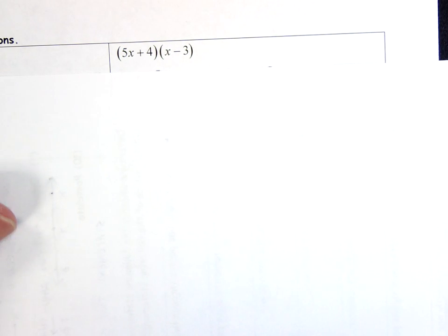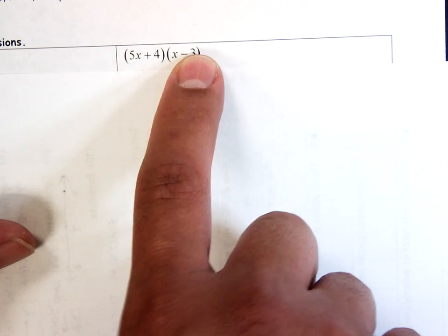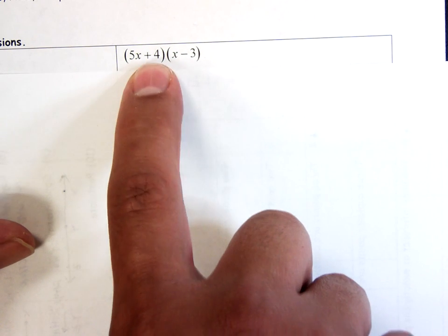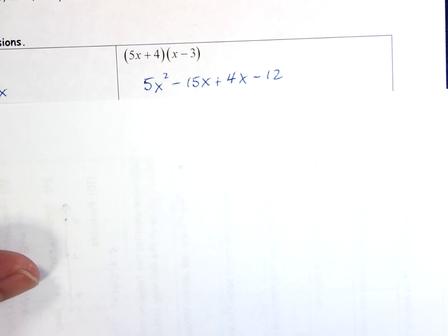Again, I've got to do double distribution here. 5x times x, 5x times minus 3, 4 times x, 4 times minus 3 which gives me that, 5x² - 15x + 4x - 12. I combine my like terms and I get 5x² - 11x - 12.